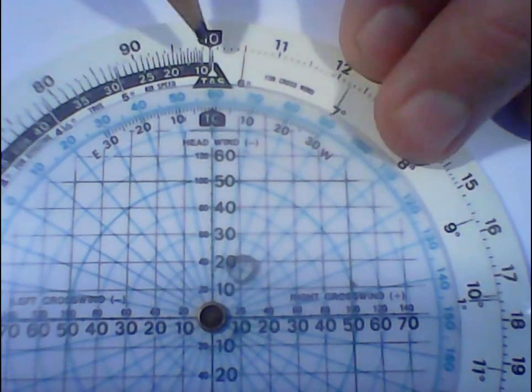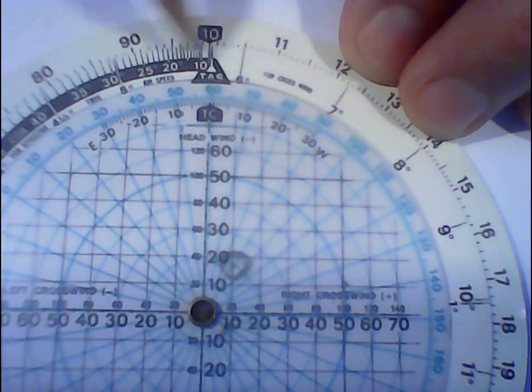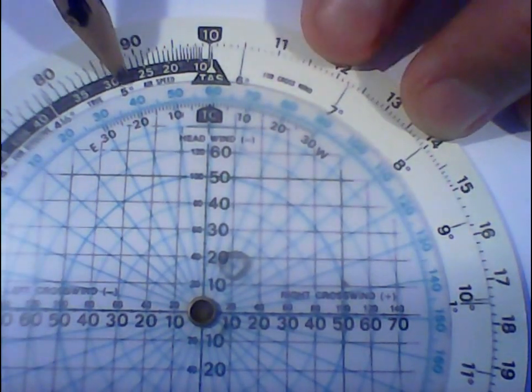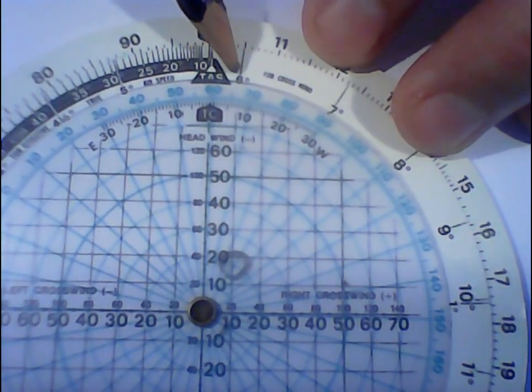So all we do then is we come around this outer scale here to 10, which is there, and we go in 1, now you notice that's 8, 7, 6, and 5's there. So 10 is closest to 6, so we need to adjust 6 degrees.